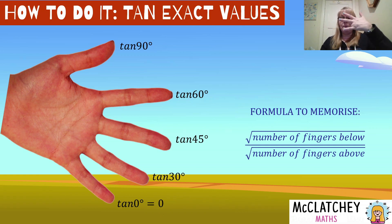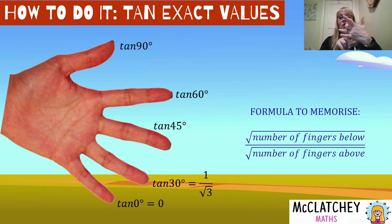Tan of 30. Hold this one in again, I've got one finger below, square root of one is just going to be one. And I've got three fingers above. So it's going to be the square root of one over the square root of three, which is just one over root three. Tan of 45. This time, I'm going to have two fingers above, two fingers below, root two over root two is just one.